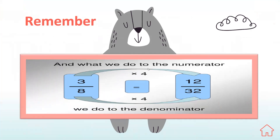Our rule was: what we do to the numerator, we do to the denominator. Here's a simple example. We have 3 eighths, and I multiplied the numerator by 4, giving me 12. Repeating the same action with the 8, which is the denominator, and multiplying it by 4 as well, giving me 32. So I found the equivalent fraction for 3 over 8 using multiplication.